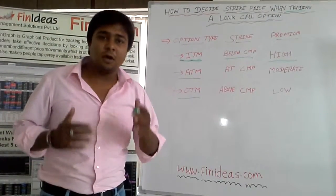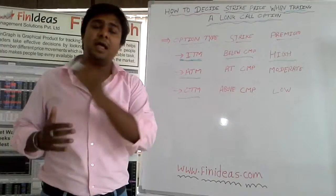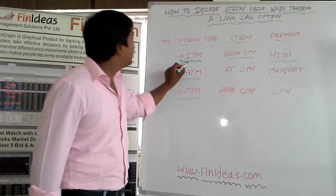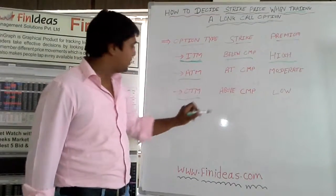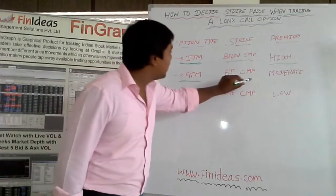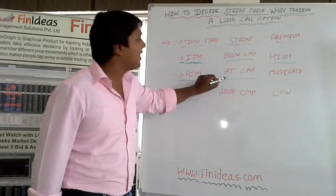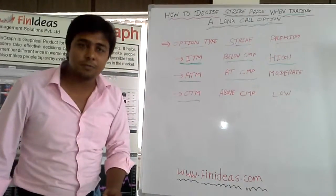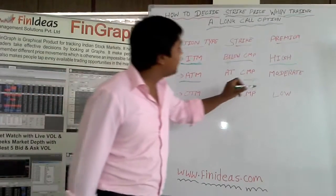At the money strikes are those strikes where the current market price of the underlying is the most nearest to. Here, the premium payout will be moderate, lower than the ITM options.